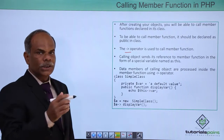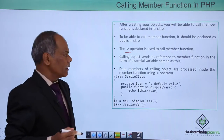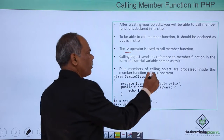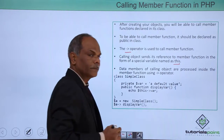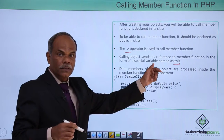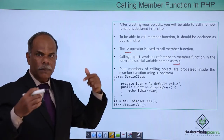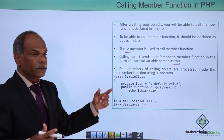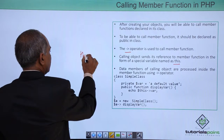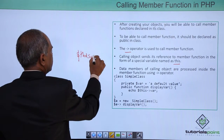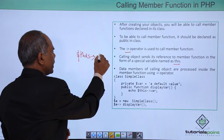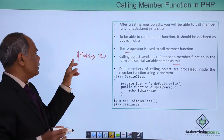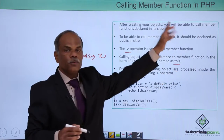When a member function is called by the object using this arrow operator, the reference of the calling object is sent to the member function in the form of a special variable called this. Using this special variable $this, the member variables belonging to the particular object which is calling the function are processed inside the function. For example, if x is the member variable declared inside the class, you refer to it as $this->x, where $this contains the reference to the calling object.